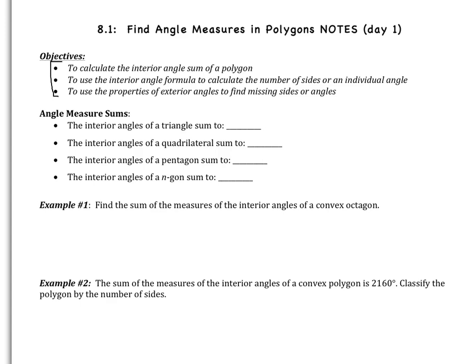Let's start with some angle sums that we should already know. The interior angles of a triangle sum to 180 degrees — we've done that all of first semester. The interior angles of a quadrilateral, like a square or a rectangle — if we think of a square, it has four right angles, so that's going to be 360 degrees.